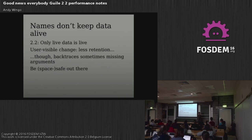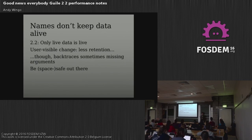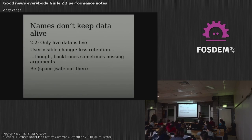The upshot is that when you do a backtrace in Guile 2.2, you won't see as many arguments. It'll replace them with an underscore — because it could be that garbage collection happened and the argument's gone, or the slot was reused for something else.